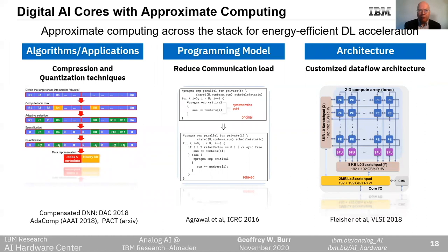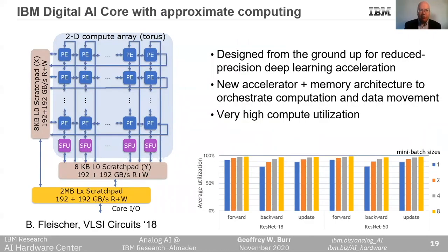We can reduce the amount of data going through the bus not by reducing the number of neurons or synapses, but by reducing the number of bits used to encode each neuron excitation or synaptic weight. We at IBM Research have been using this approximate computing across the compute stack to improve energy efficiency. We have introduced a number of compression and quantization techniques — both for encoding excitations and weights in fewer bits, and for sharing weight gradient information across different parts of the system training a large DNN model. We've developed customized dataflow architectures that carefully organize computation in a grid of low-resolution processing elements, together with higher-resolution special function units and nearby scratchpad SRAM, enabling high utilization across a wide variety of workloads even when the batch size is very small.